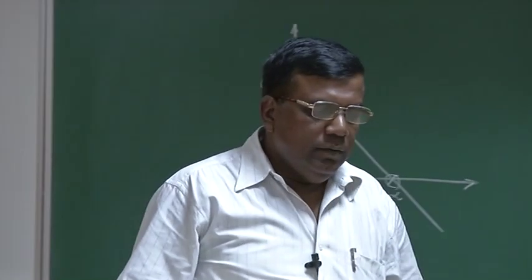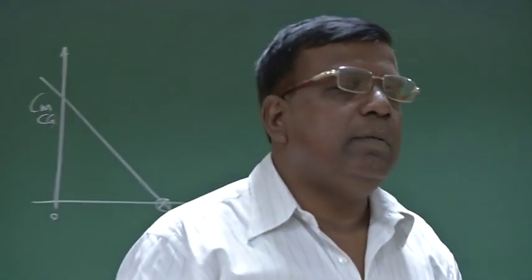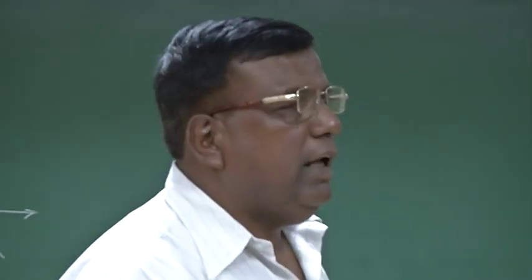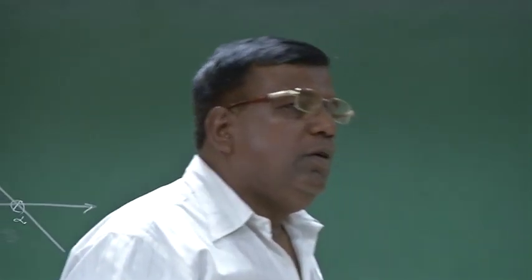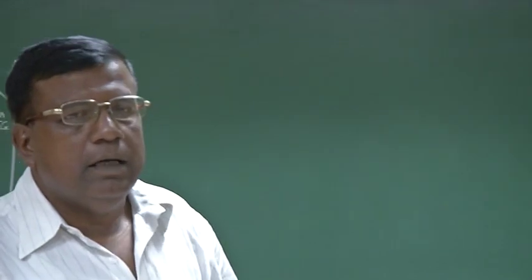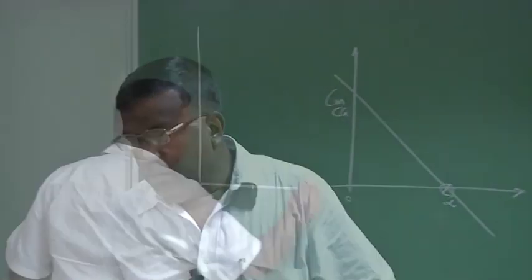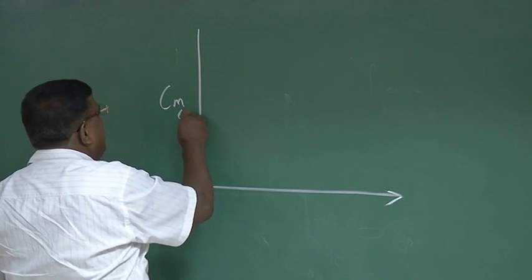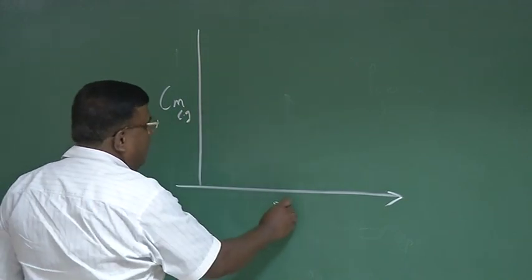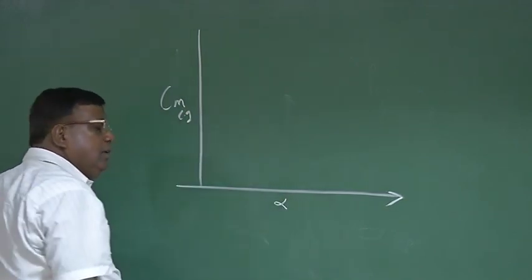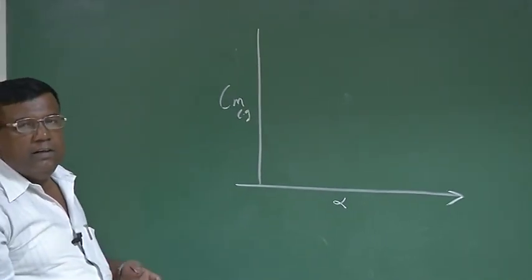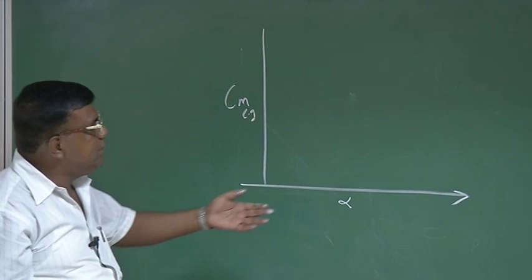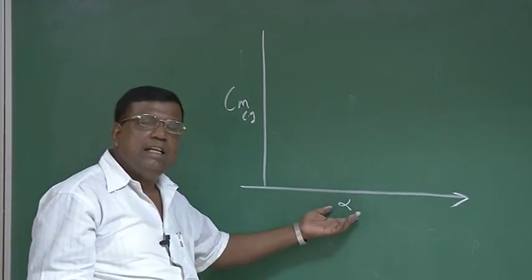We are in continuation with the stability and control aspects; we will now be discussing about aircraft. By now, you understand CM CG versus alpha or versus CL — they are not really different, it is a question of changing the scale.